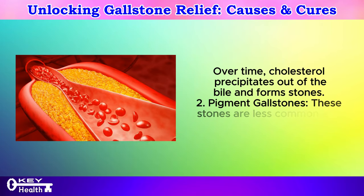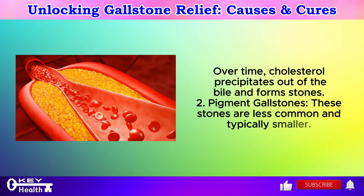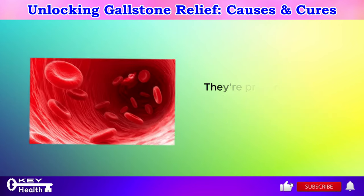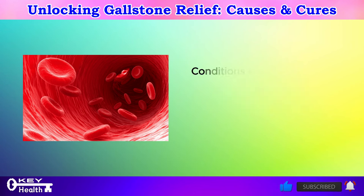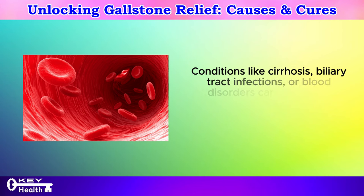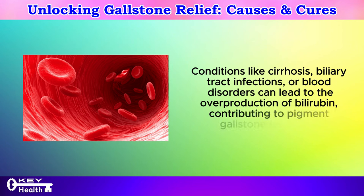Pigment gallstones: These stones are less common and typically smaller. They're primarily made of bilirubin, a breakdown product of red blood cells. Conditions like cirrhosis, biliary tract infections, or blood disorders can lead to the overproduction of bilirubin, contributing to pigment gallstone formation.